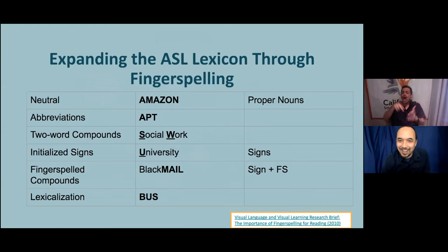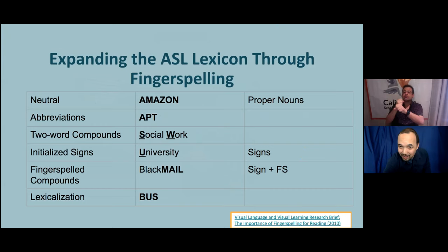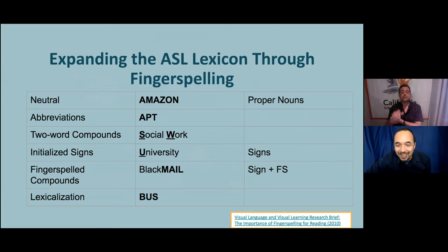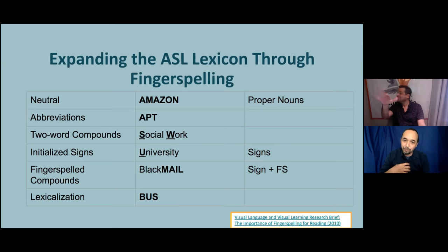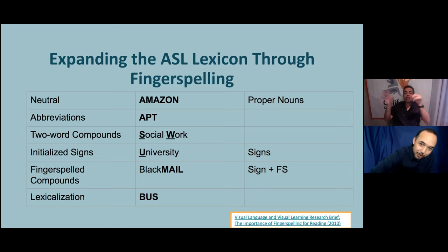So we talked about PJs to represent pajamas. You can see these word-sign pairs: social worker, PJs, APT for apartment — a shortening — Amazon, which gets lexicalization in the fingerspelling, and pizza. You can see different ways that fingerspelling and English letters represented through fingerspelling are incorporated into ASL signs. Sometimes you do a sign with fingerspelling, or a fingerspelling with a sign, to represent a compound word in English. These are strategies used by highly literate signers.